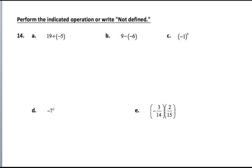19 plus a negative 5 is equal to a positive 14. The rule is to subtract the absolute values of the two numbers. The absolute values are 19 and 5.